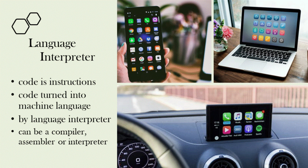That code needs to be turned into machine language, and that is done by the language interpreter. For example, if it's written in Java, C, or C++ it will be compiled into machine language. Other languages such as Python use an interpreter, and assembly language uses an assembler. The language interpreter changes the code — the instructions — into machine language so the device, phone, or computer can run the program.